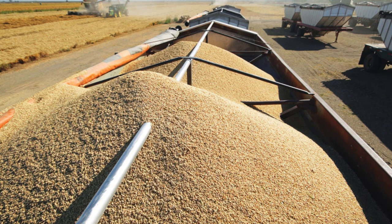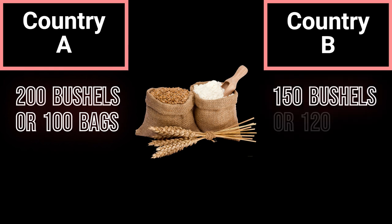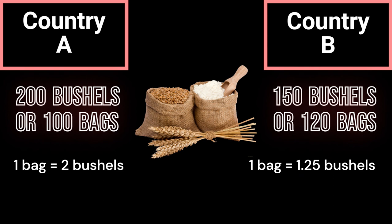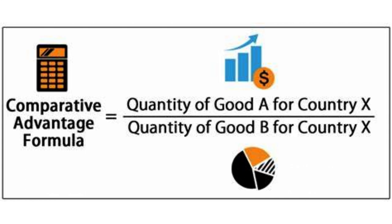Example of comparative advantage: country A and country B produce both wheat and rice. In one hour, country A can produce 200 bushels of wheat or 100 bags of rice; country B can produce 150 bushels of wheat or 120 bags of rice. The opportunity cost of one bag of rice in country A is 2 bushels of wheat, while in country B it is 1.25 bushels of wheat. Country B has a lower opportunity cost of producing wheat (0.83 bags of rice per bushel) compared to country A (0.5 bags of rice per bushel). Therefore, country A has a comparative advantage in rice and country B has a comparative advantage in wheat.